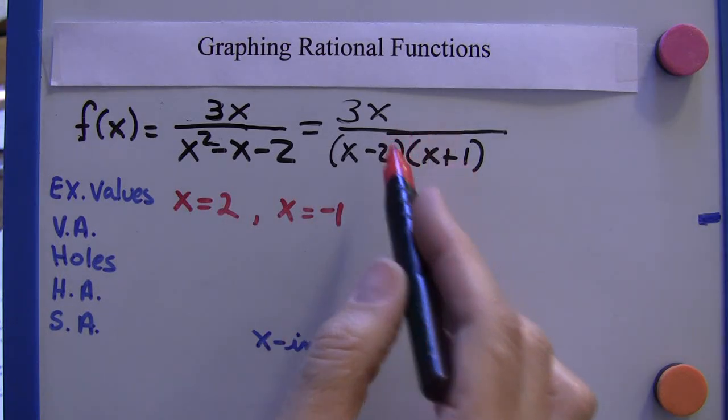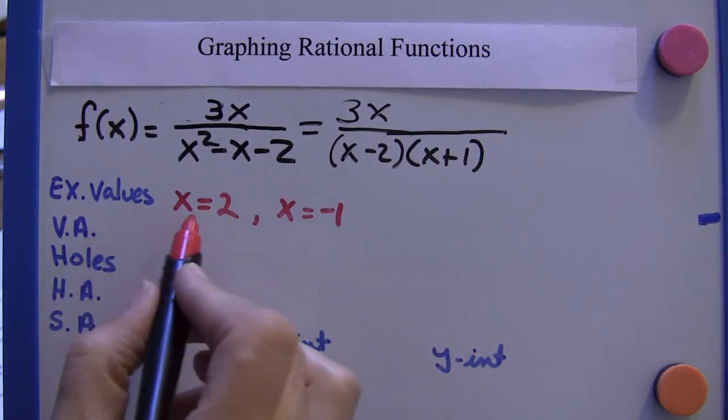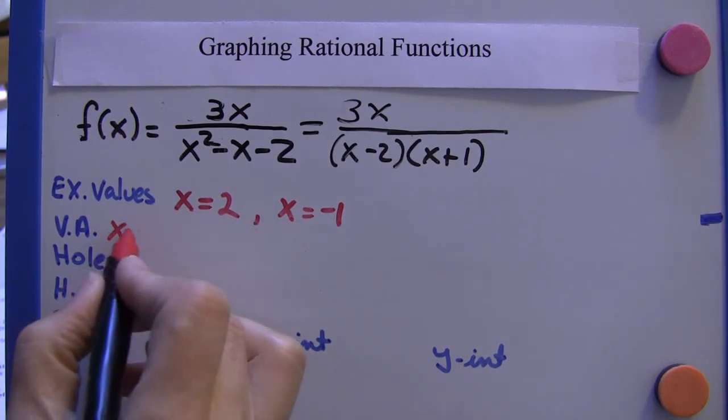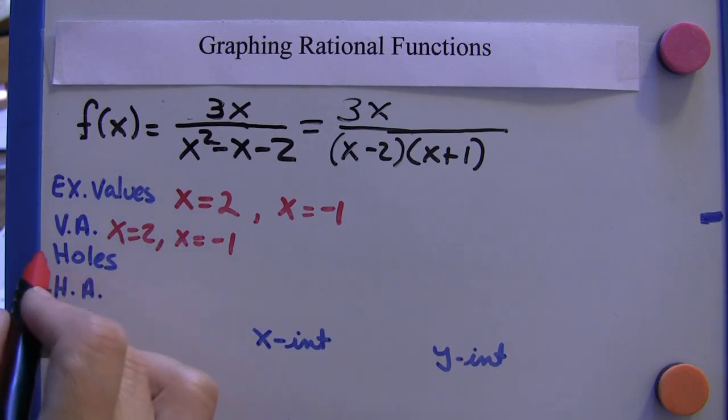There are no holes because we don't have to reduce anything out of this equation. So these are our vertical asymptotes: x equals 2 and x equals negative 1. No holes.